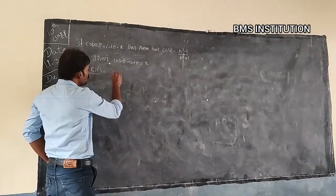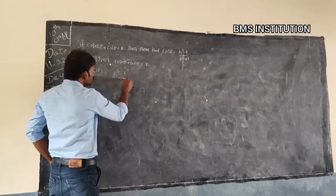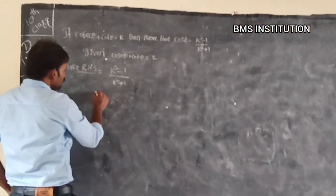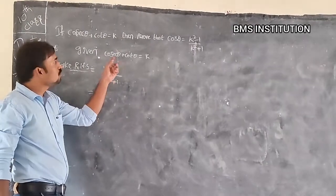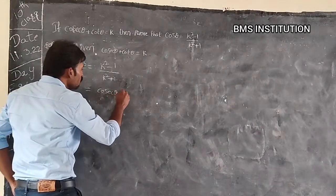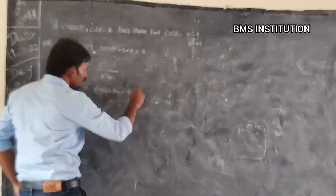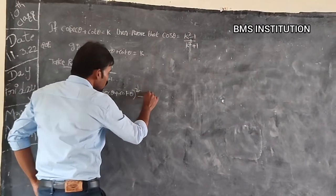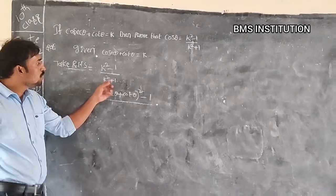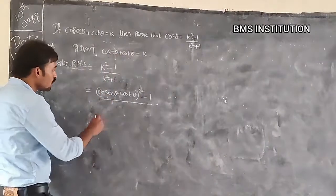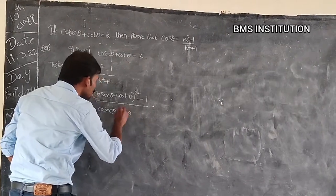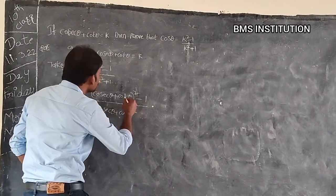What is RHS here? It is (k² - 1) / (k² + 1). In place of k, we are going to substitute cosecant theta plus cot theta. What will happen? Cosecant theta plus cot theta whole square minus 1, divided by cosecant theta plus cot theta whole square plus 1.